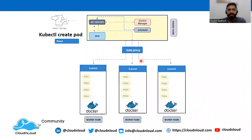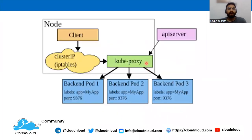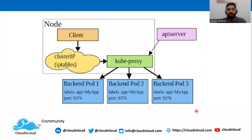Kube-proxy helps ensure high availability by automatically distributing network traffic across all available backends or pods. So if one pod fails, traffic is redirected to another available pod.